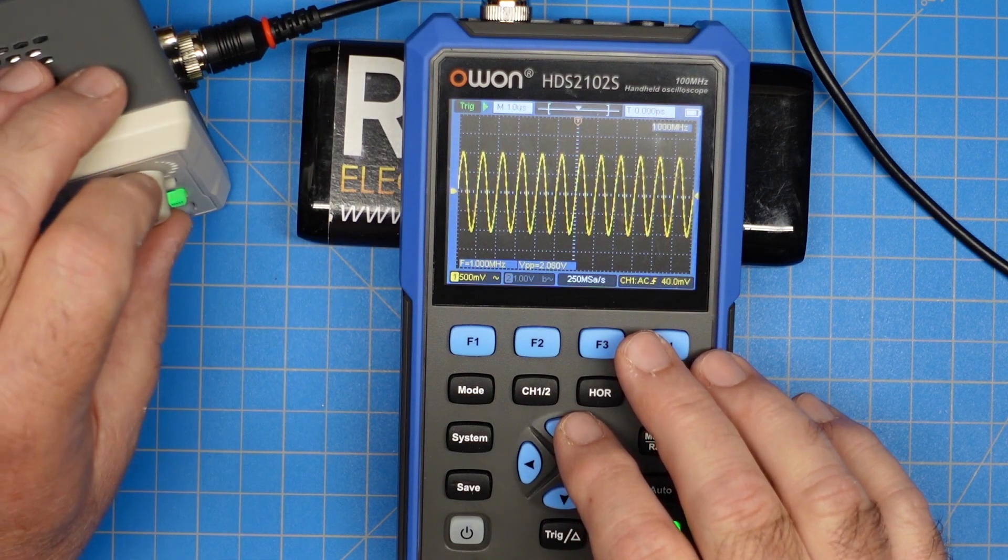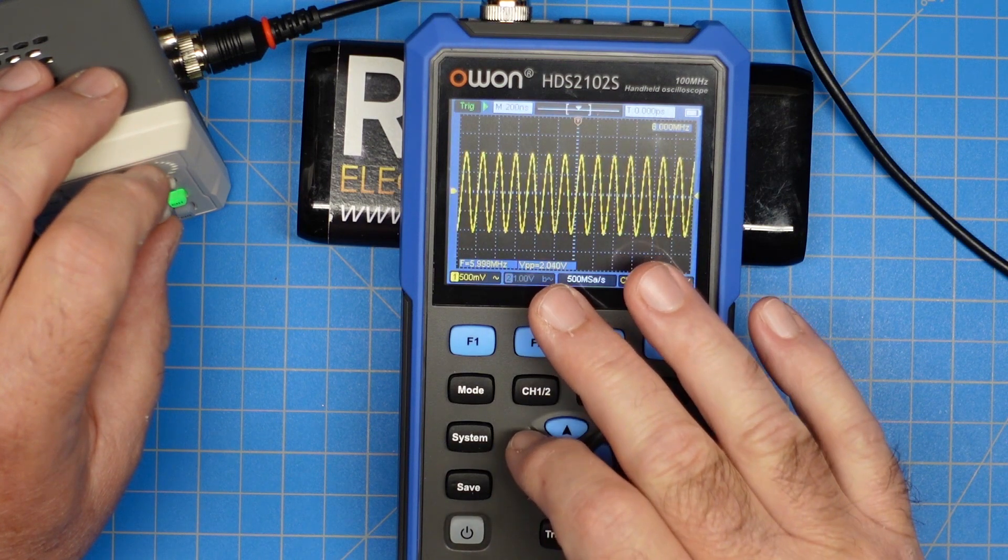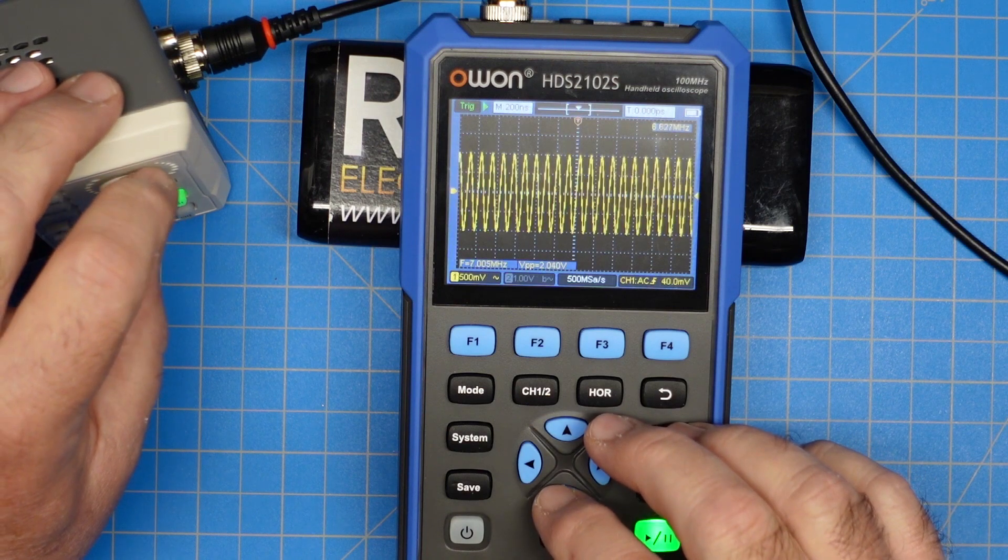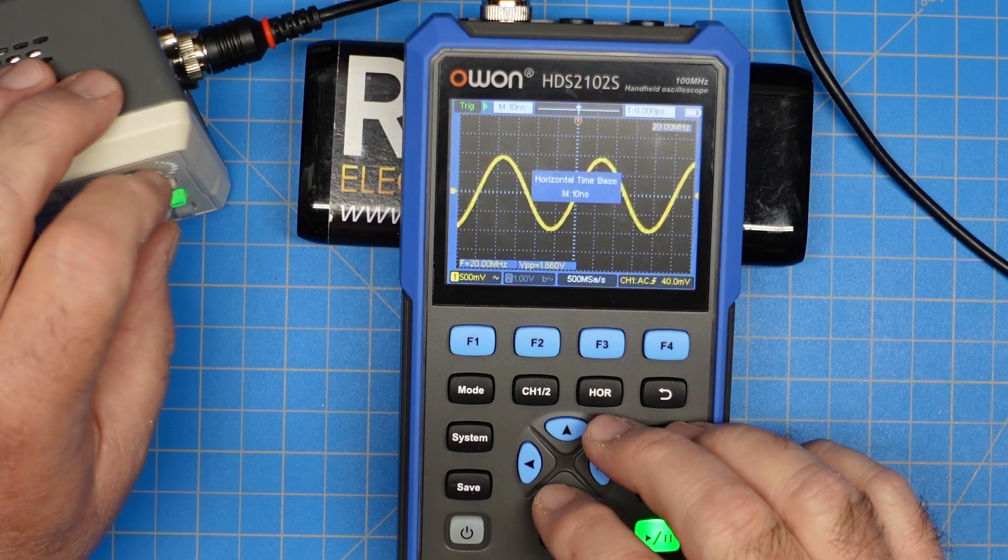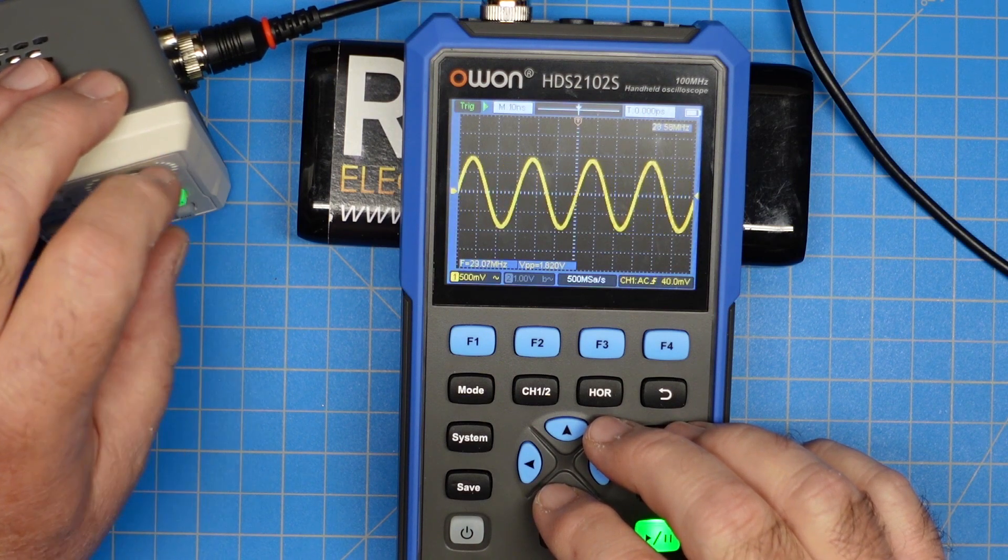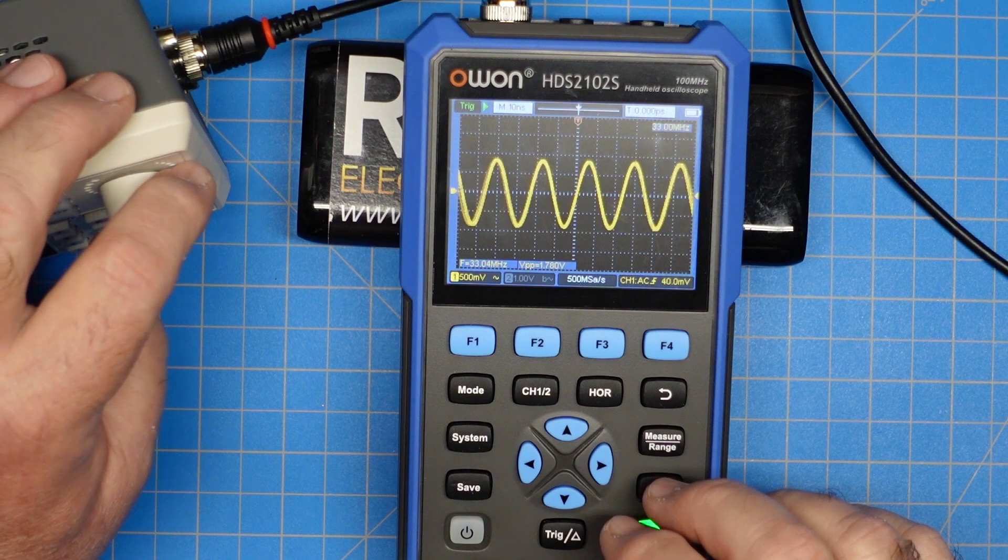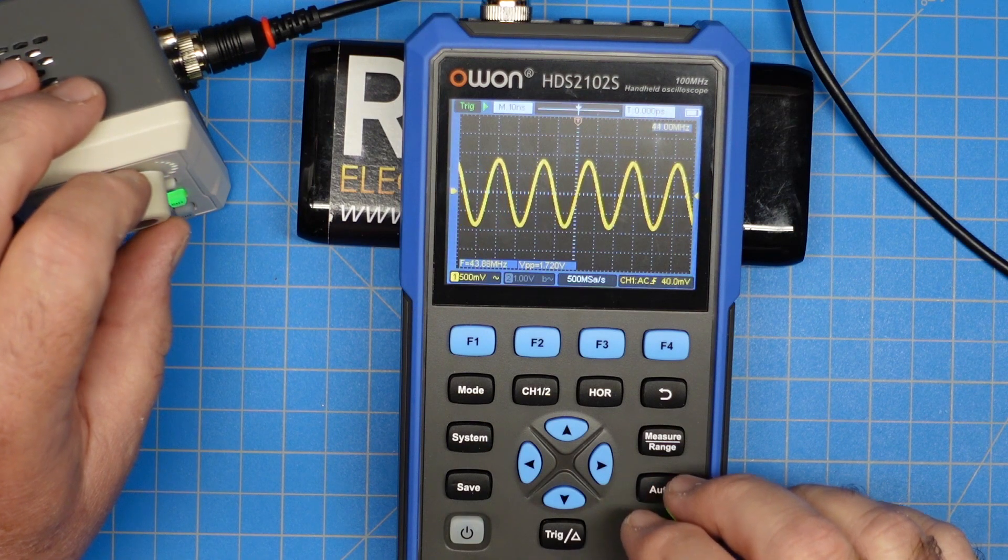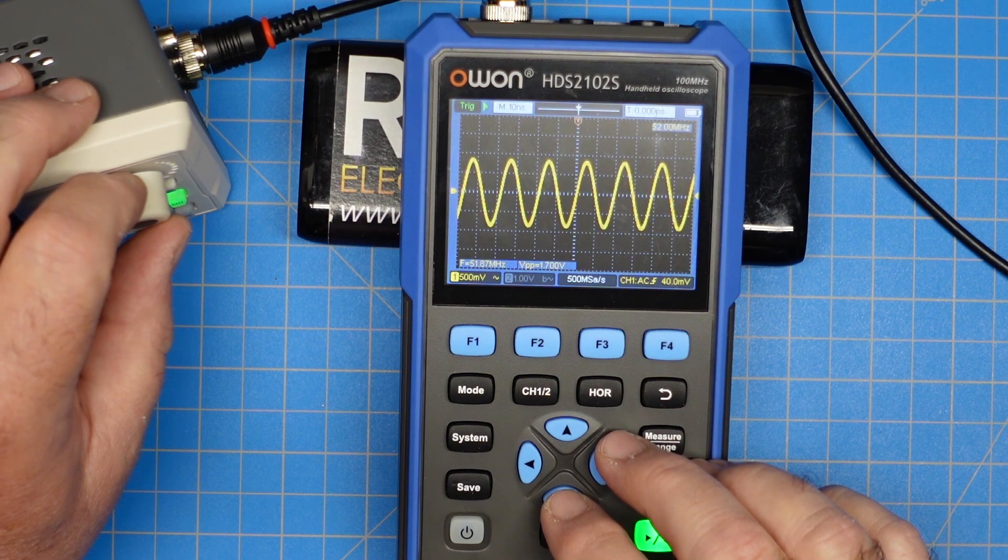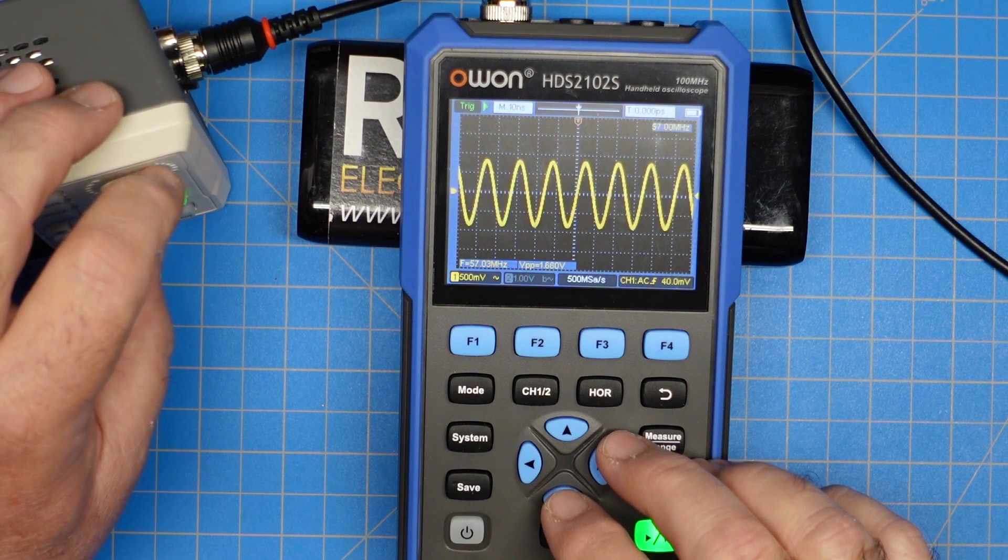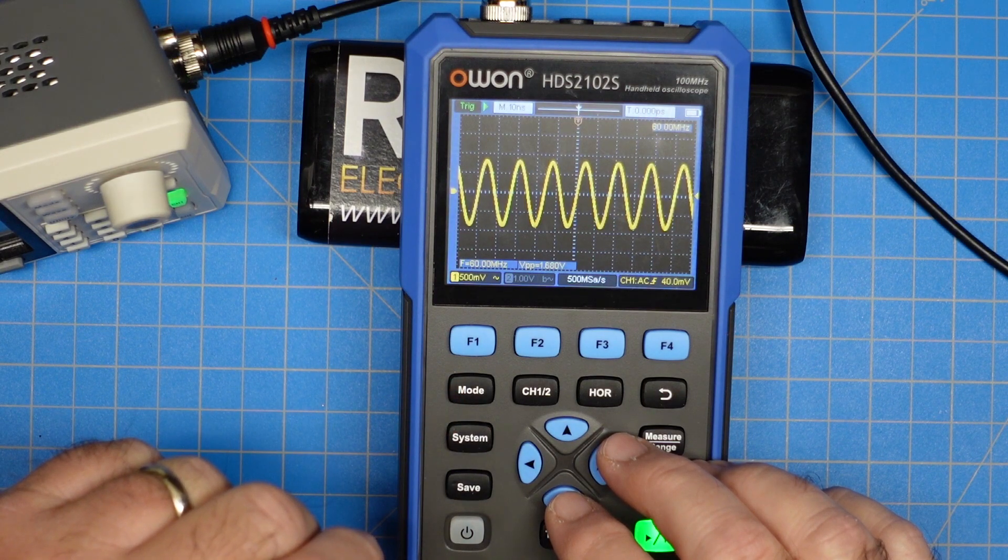So here we go. We're at one megahertz and I'm going to start to crank this up and look at our peak to peak voltage has not significantly changed. It's dropped a little bit and we're at 32 megahertz. If you look right there, our peak to peak has dropped down to 1.7. 52 megahertz and we're down holding at 1.7, and there's 60 and we're at 1.66 volts peak to peak.